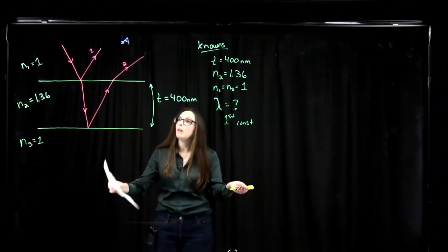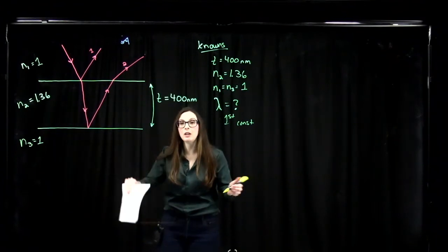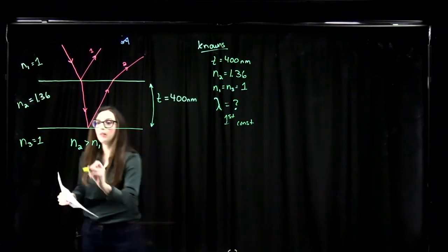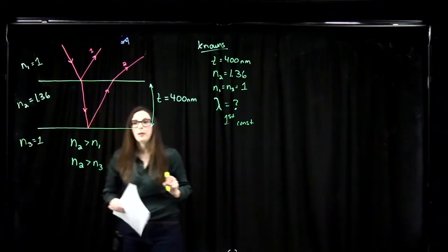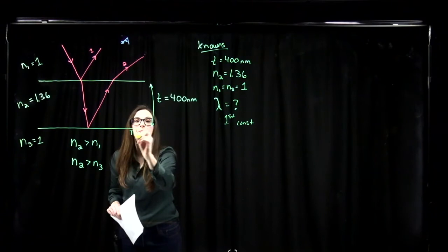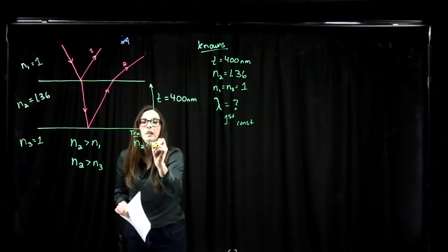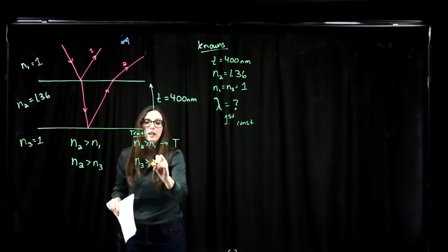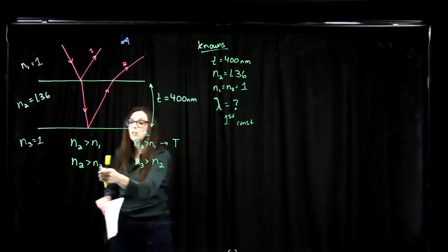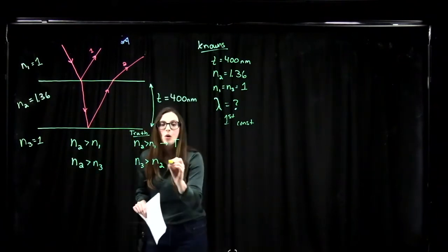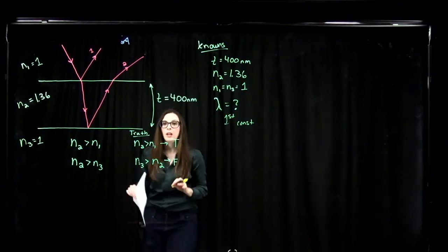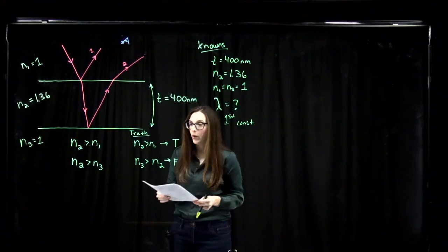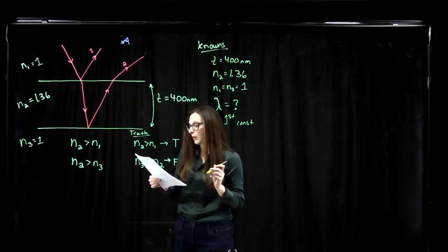Looking at our thin film setup, we see that N2 is greater than N1, and N2 is greater than N3. In the truth table, the first column asks: is N2 greater than N1? For us, that is true. The second column asks: is N3 greater than N2? For us, that is false — N3 is less than N2. So we choose the row where N2 > N1 is true and N3 > N2 is false.